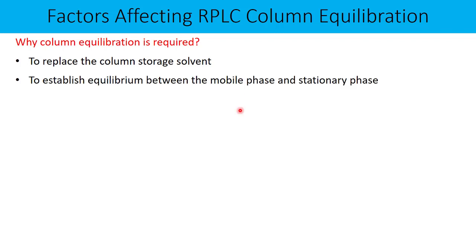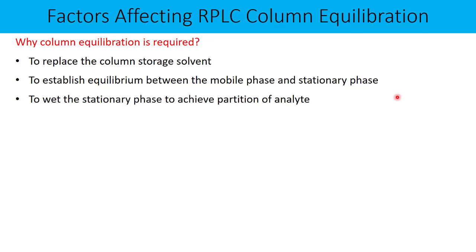The second important reason is to establish equilibrium between the mobile phase and the stationary phase. Your mobile phase is also partitioning with the stationary phase and that equilibrium has to be achieved. So to achieve that equilibration, the column equilibration with the mobile phase is important.